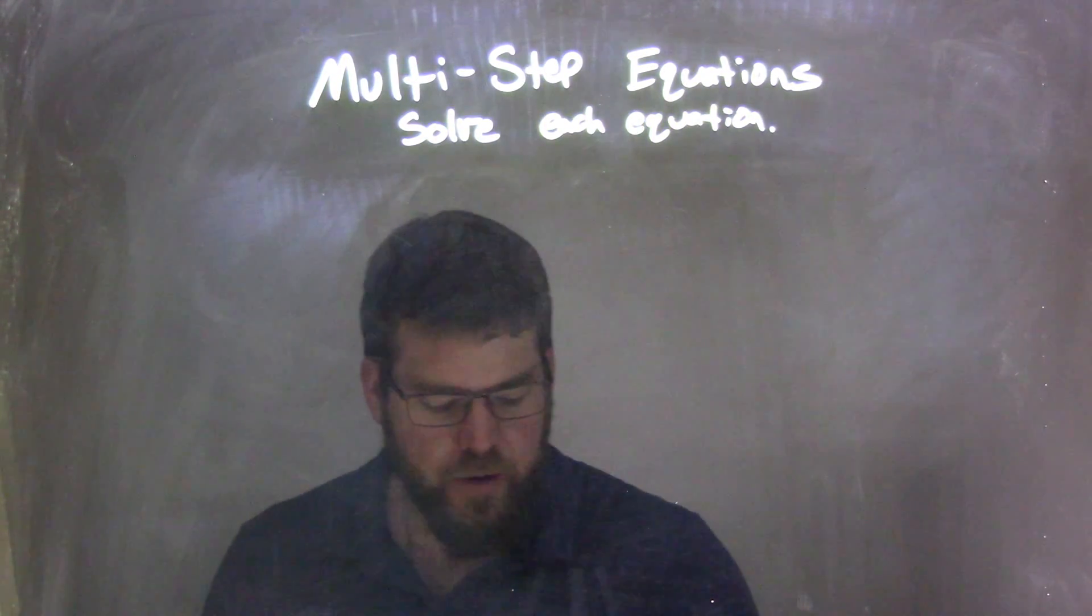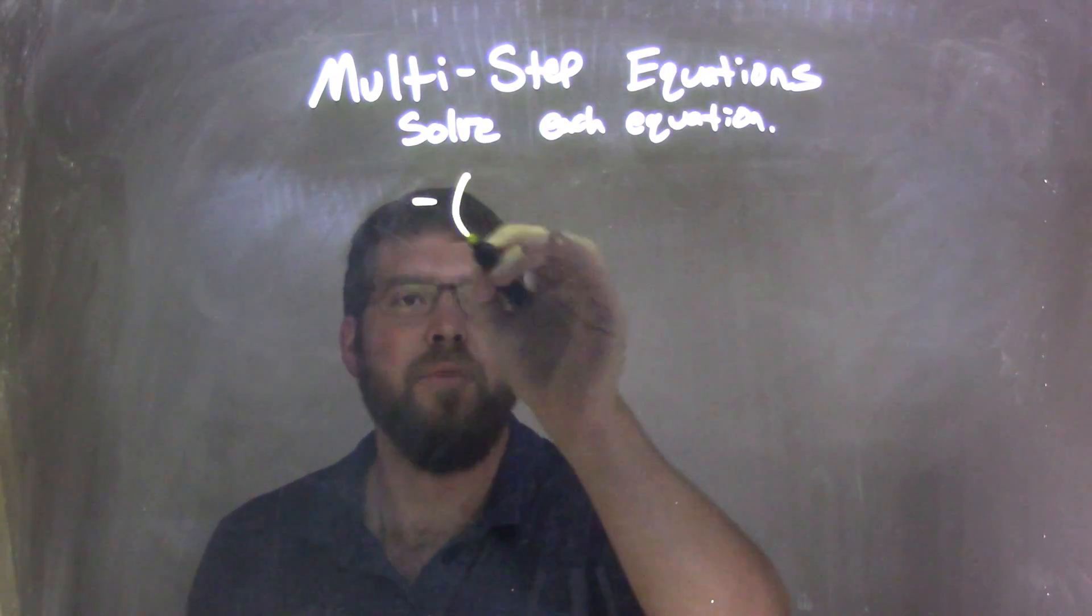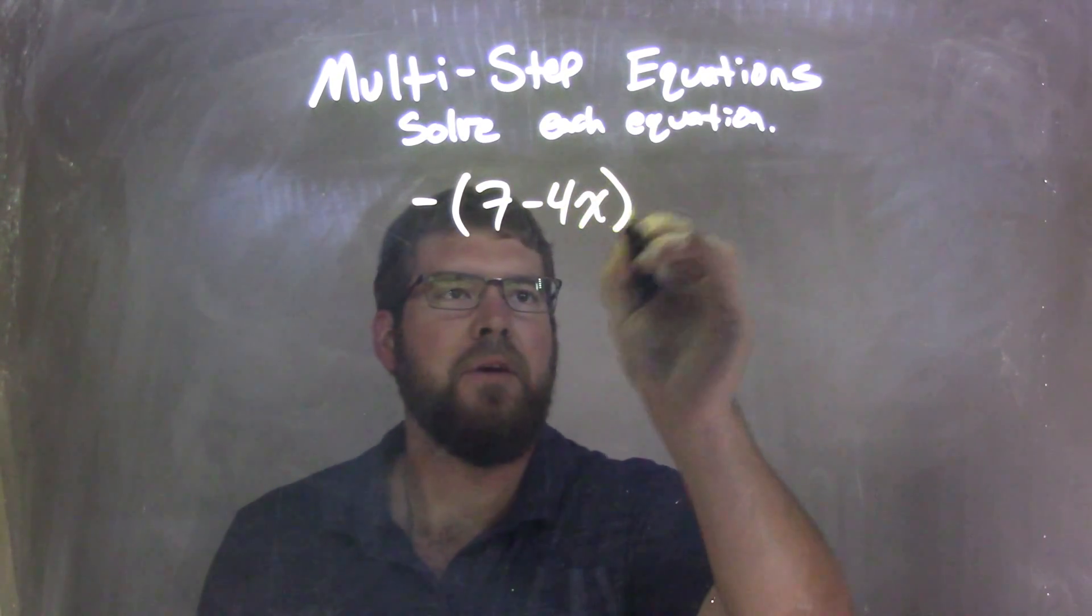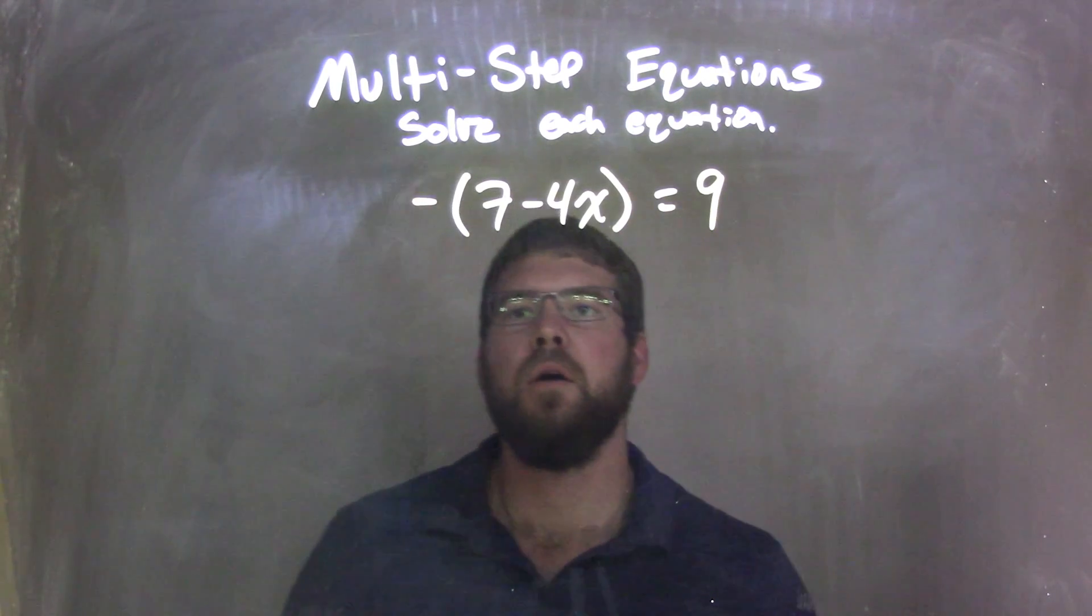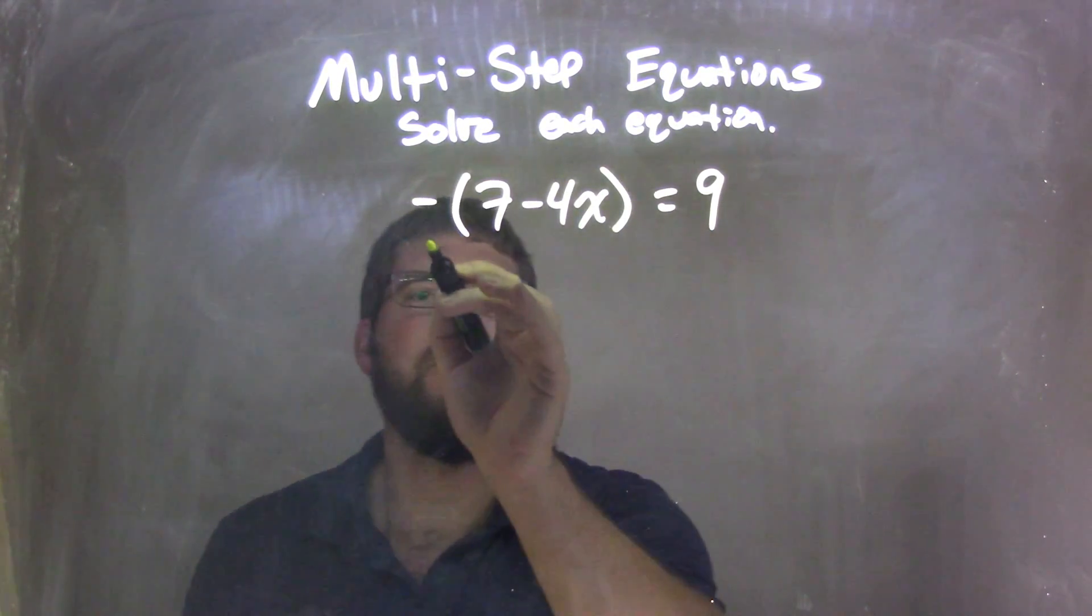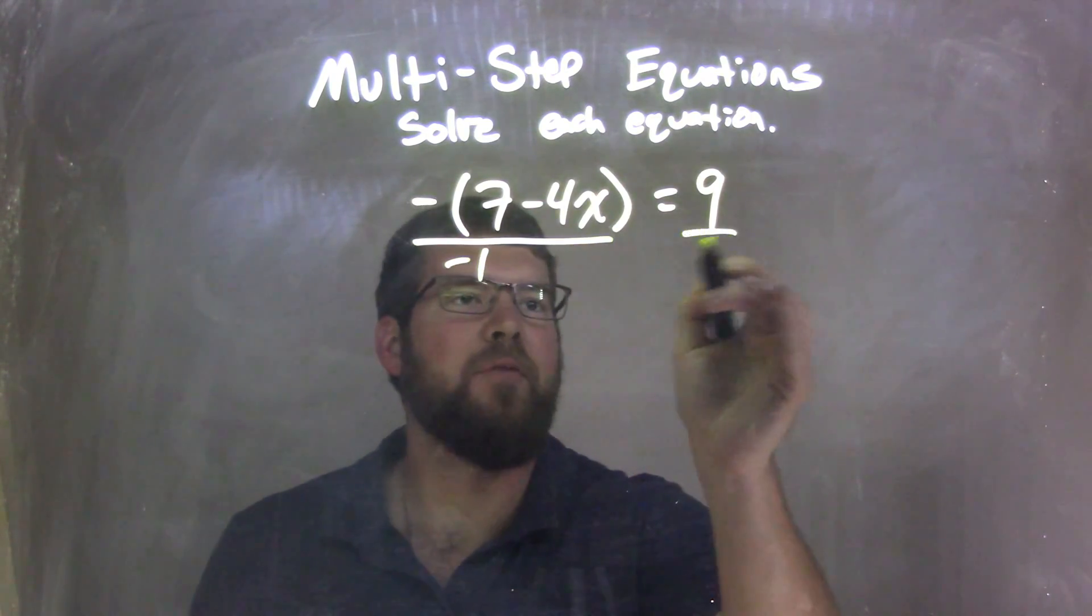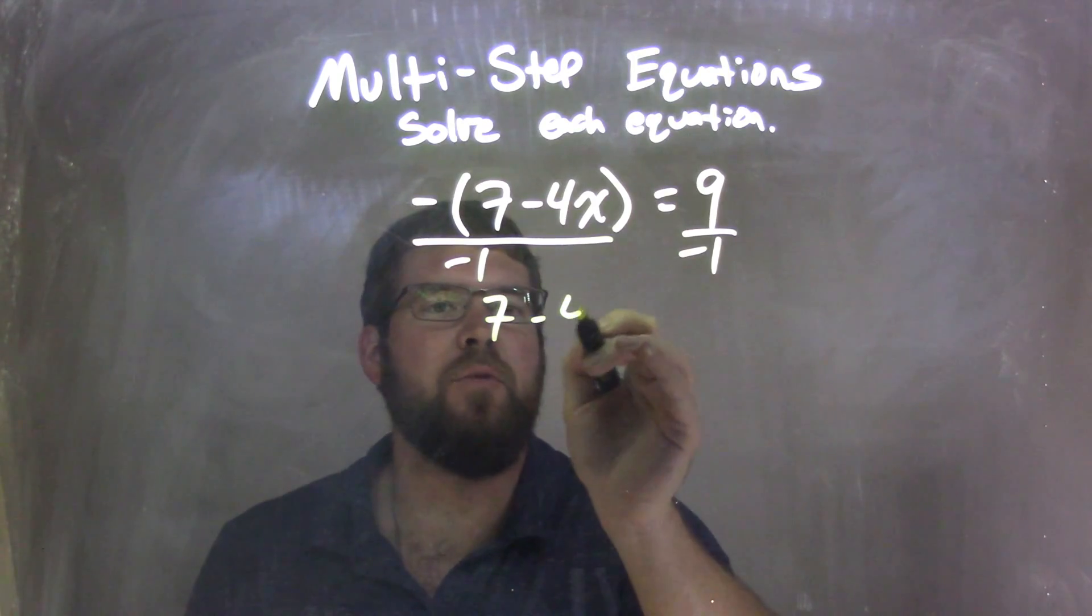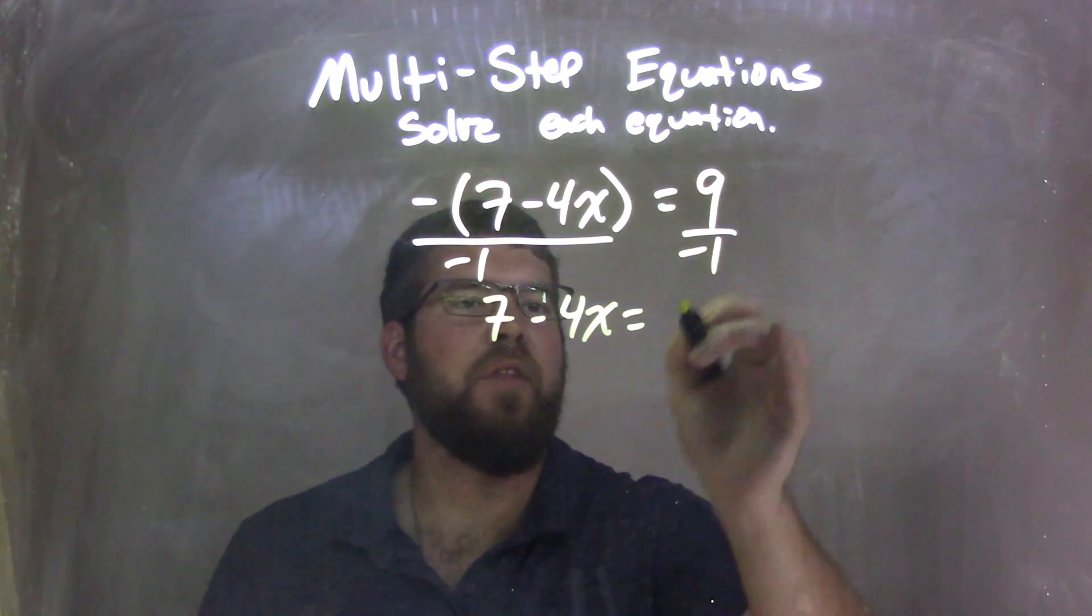If I was given this equation here, negative parentheses 7 minus 4x equals 9. What I'm going to do first is that negative on the outside, I like to get rid of it, so I'm going to divide both sides by negative 1. This allows me to have 7 minus 4x on the left, which equals negative 9.